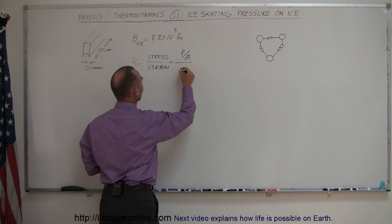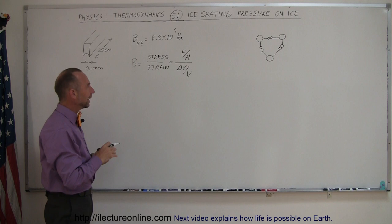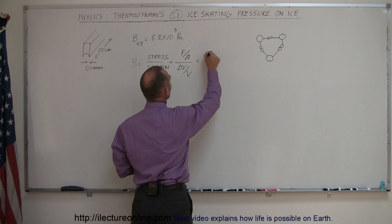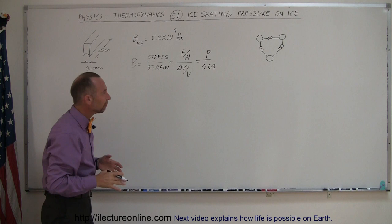The stress normally is equal to the force per unit area, which of course are the units of pressure, and you divide that by the change in the volume over the original volume. Now for water and ice, the change in the volume is about 9%, so this is equal to the pressure divided by 0.09.